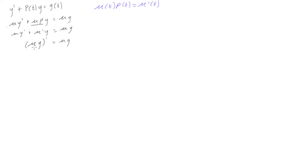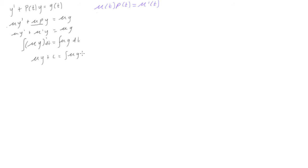Now let's integrate both sides with dt on each side. Remember, we're just not writing the t's to save time, but they are still there. The integral of the derivative of something is just that something, so we get mu times y on the left, and on the right we have the integral of mu times g dt.